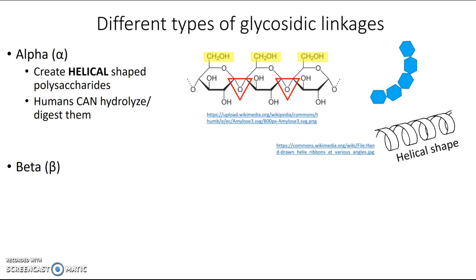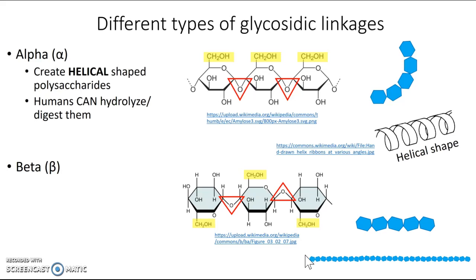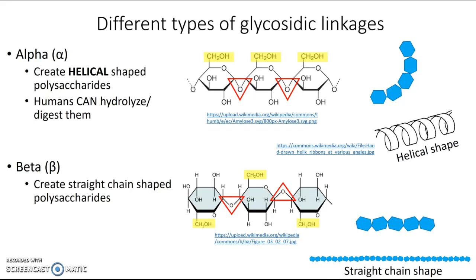The other type is called a beta glycosidic linkage. In this structure, the sixth carbon alternates — sticking up on some and down on others — and the linkages face opposite directions. The bond angles cancel out, resulting in a polysaccharide that forms a straight chain rather than coiling. Humans cannot hydrolyze polysaccharides with beta glycosidic linkages because our digestive systems do not produce an enzyme that can perform hydrolysis on that particular type of bond.